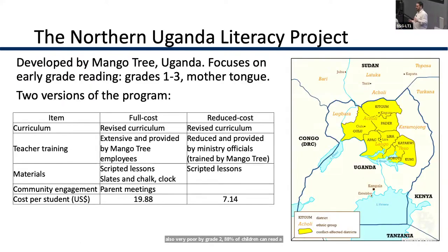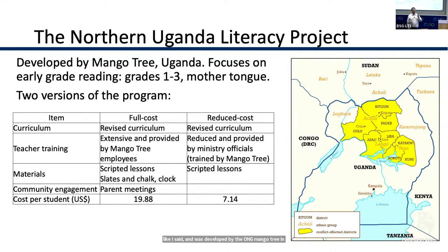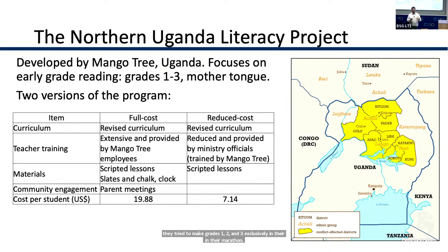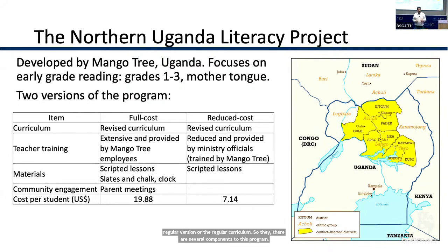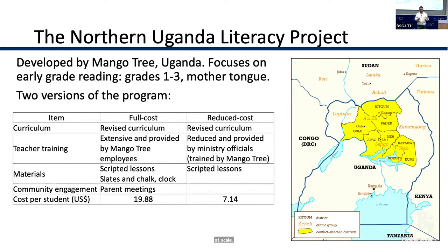The program, developed by the NGO Mango Tree in northern Uganda, focuses on grades one through three and specifically introduces students to reading in their mother tongue, making those grades exclusively mother-tongue based. Concepts are introduced more slowly than the regular curriculum. Mango Tree developed two versions of the program: a full-cost version and a reduced-cost version, thinking the original might be too costly to carry at scale.